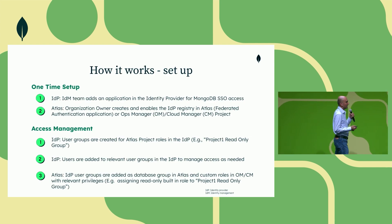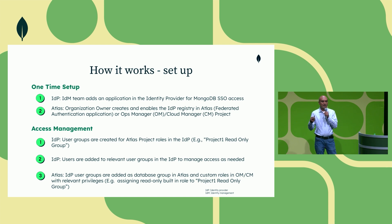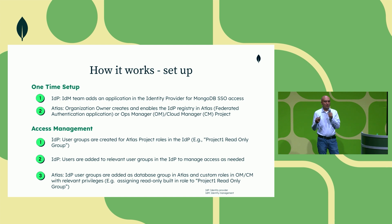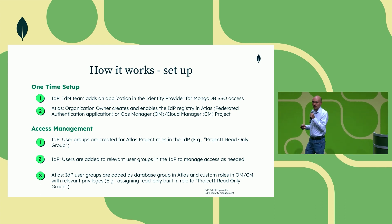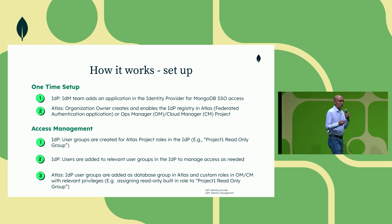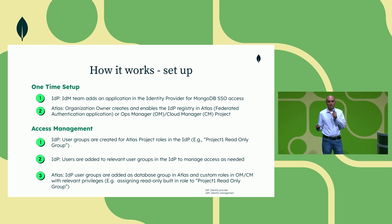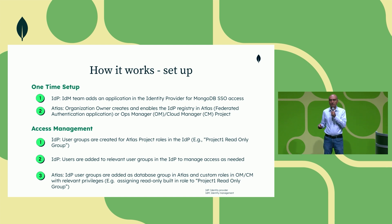In a bit more detail, there is a one-time setup and an access management setup. One-time setup involves configuring your identity provider — setting up an SSO application for MongoDB access in Entra ID or Okta — and then the organization owner sets up the identity provider configuration in Atlas. For access management, you create user groups within the identity provider for the relevant database groups you want for Atlas clusters, add users to those groups — for example, a read-only group or a read-and-write group — and then add those database groups into MongoDB Atlas.